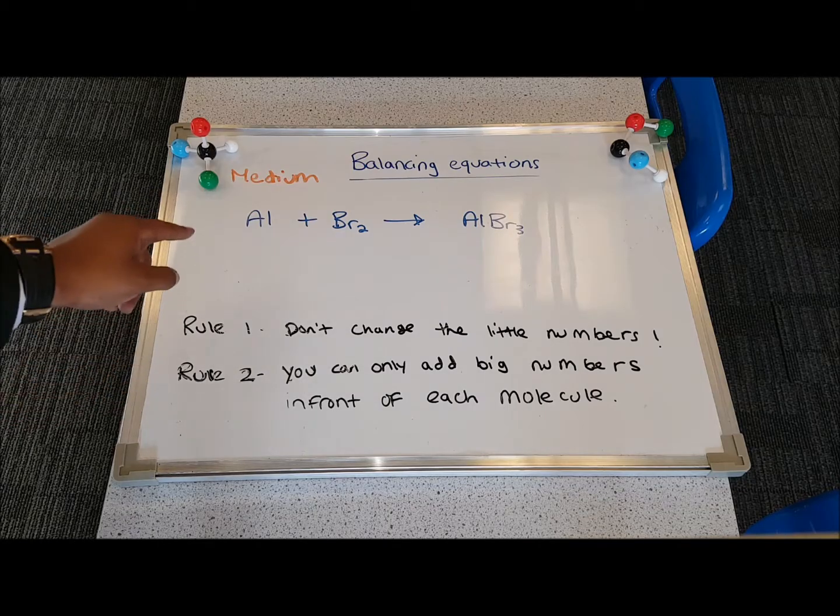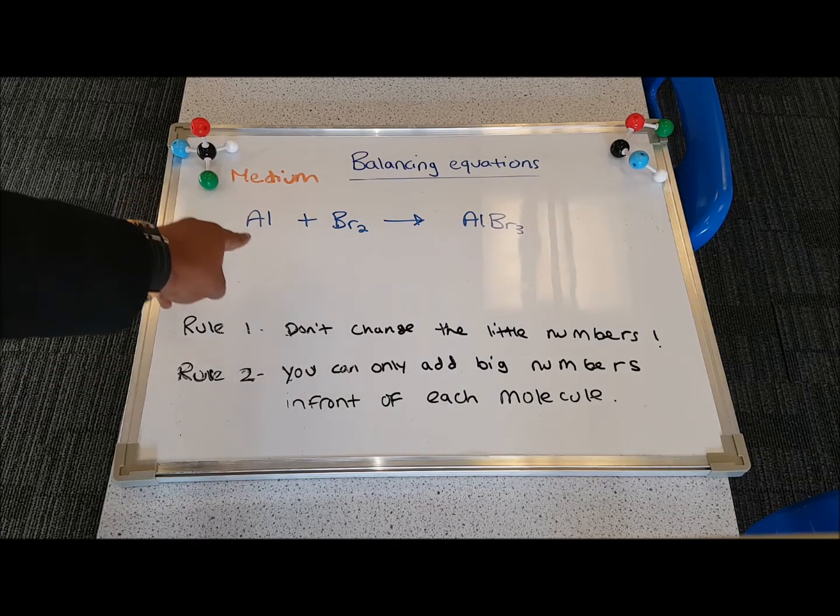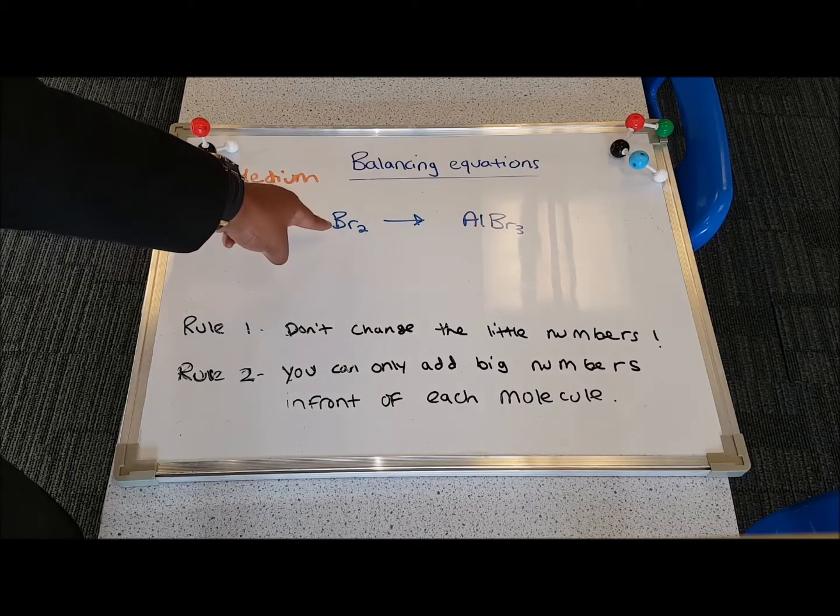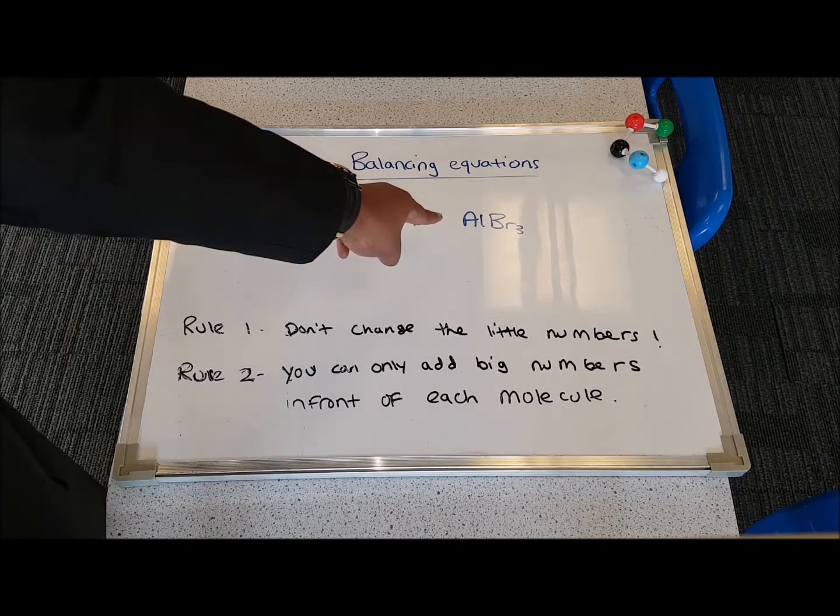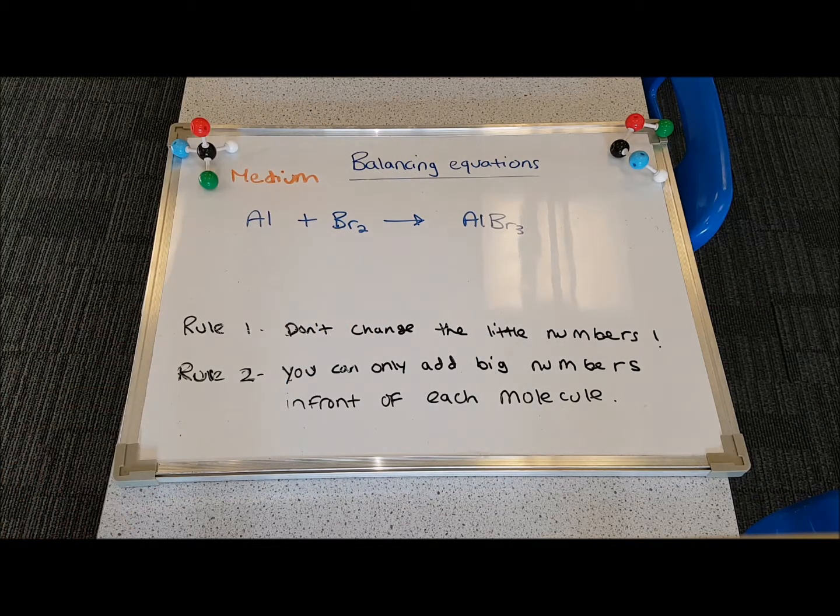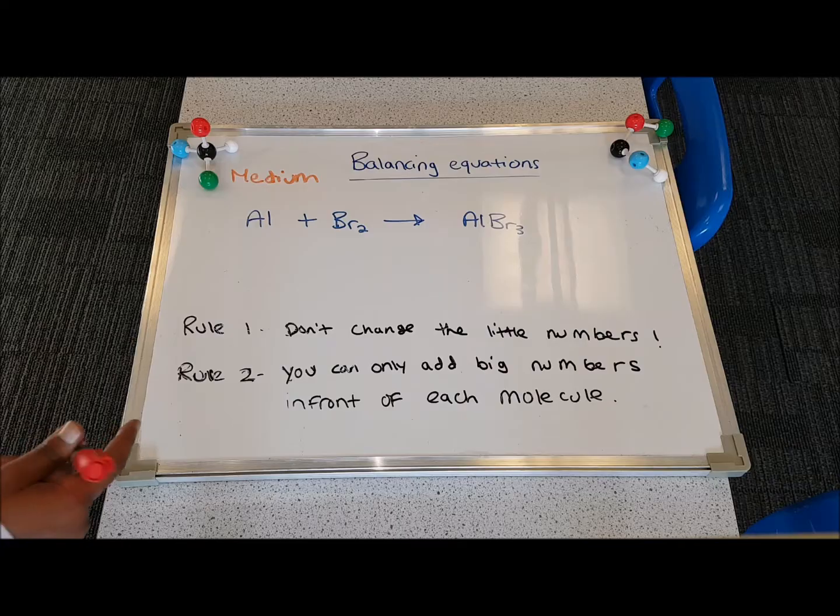Here's our second example. This is a medium difficulty balancing equations example. You have Al, aluminium, Br2, bromine, giving us aluminium bromide, which is AlBr3. Now, to balance this, I'm going to give you a quick tip.